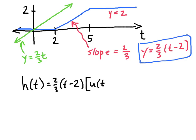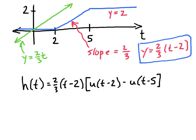Building h of t in the same manner as before: the ramping piece 2 thirds times t minus 2 turns on at time 2 and off at time 5, giving us u of t minus 2 minus u of t minus 5. Then to turn on the constant value 2 after time 5, we add plus 2 times u of t minus 5. That is the ramp function h written using unit step functions.